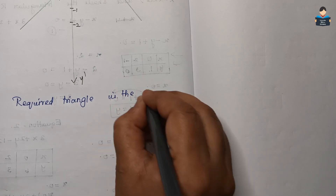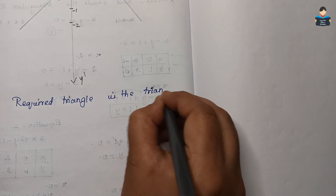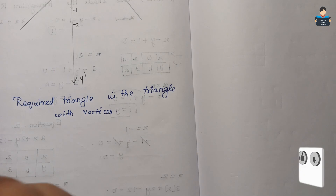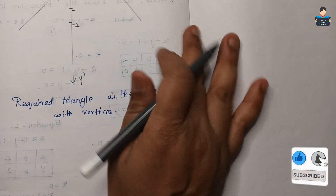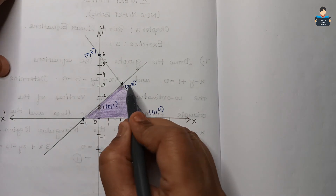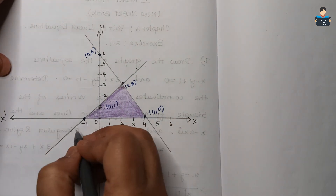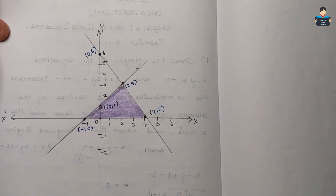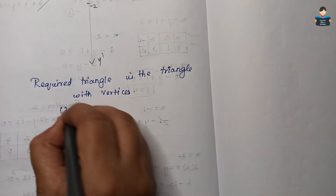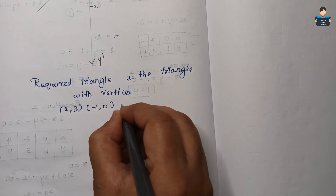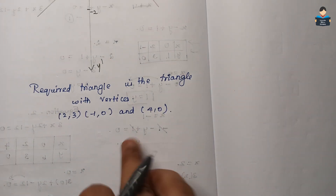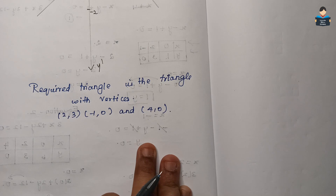This is the required triangle. The vertices of the triangle — we can identify them from the graph. The vertices are (2, 3), (4, 0), and (minus 1, 0). These are the coordinates of the vertices of the triangle formed by the two lines and the x-axis.